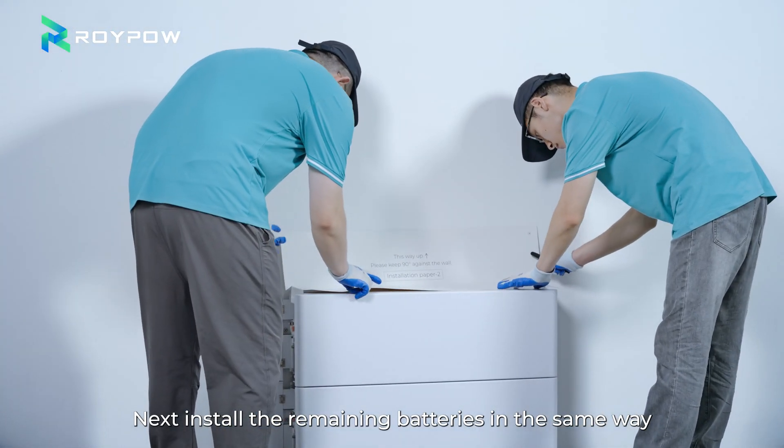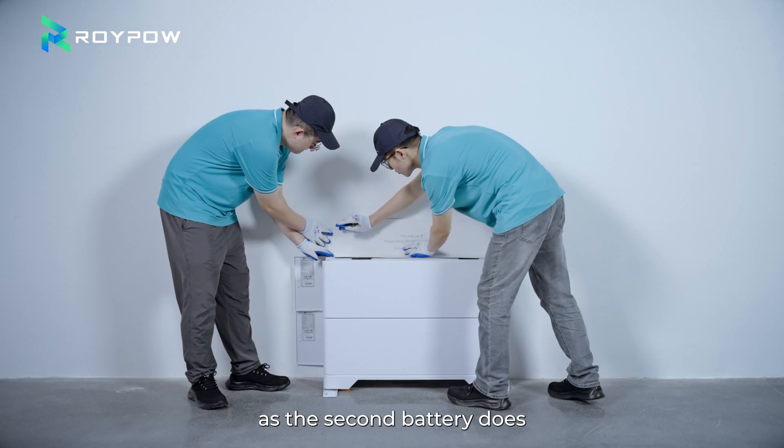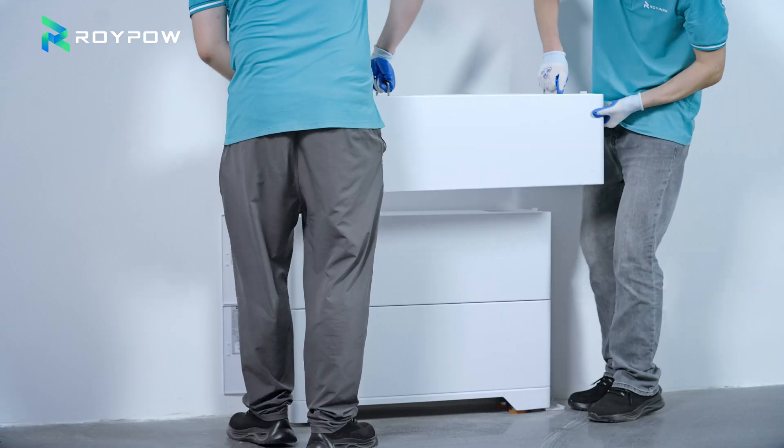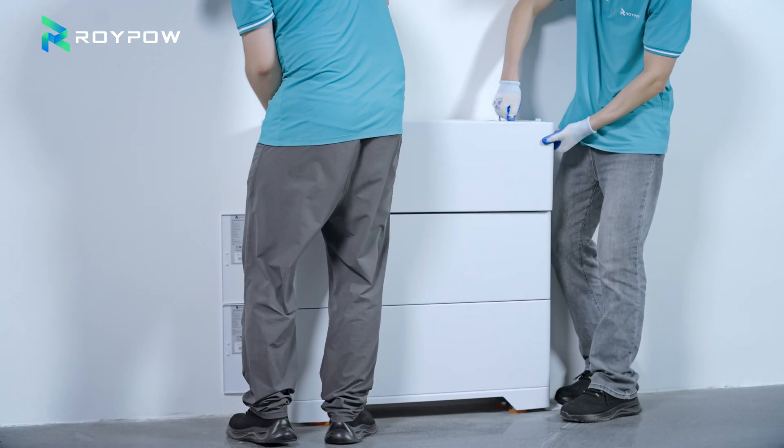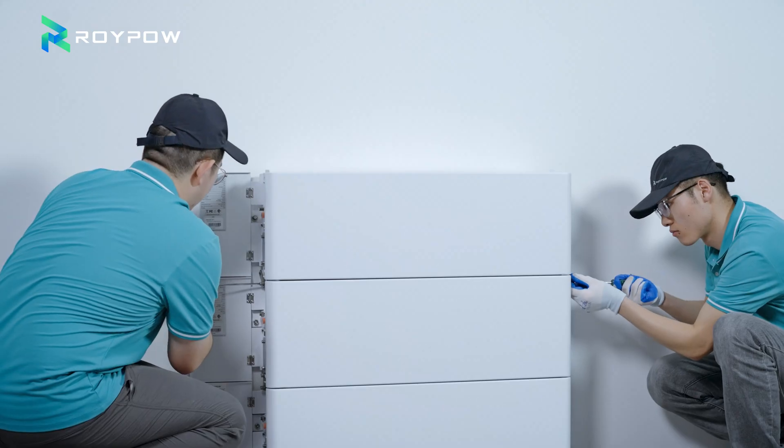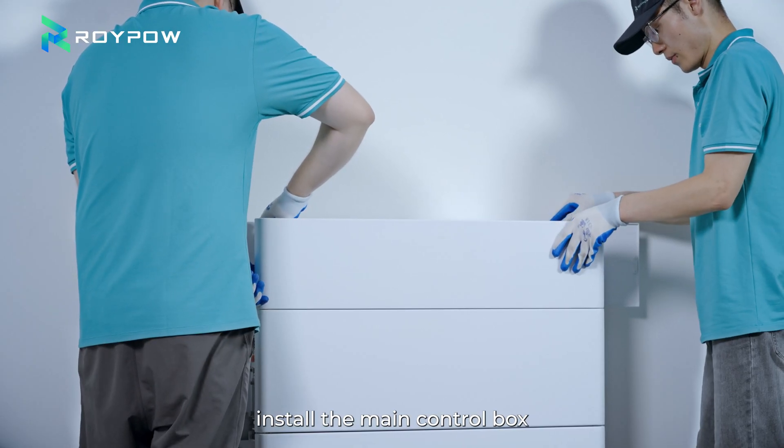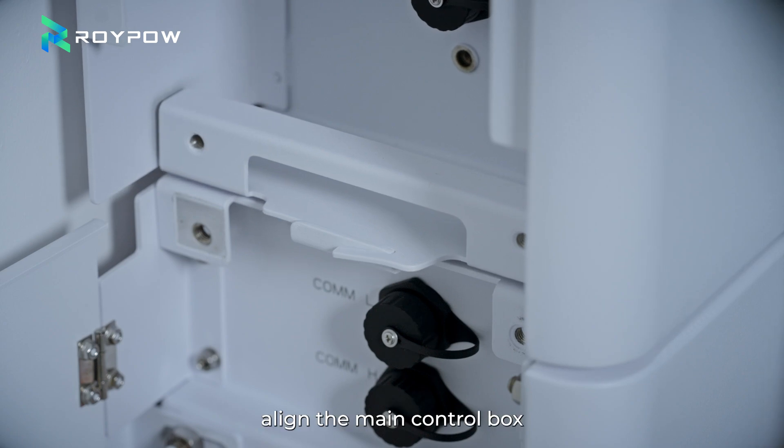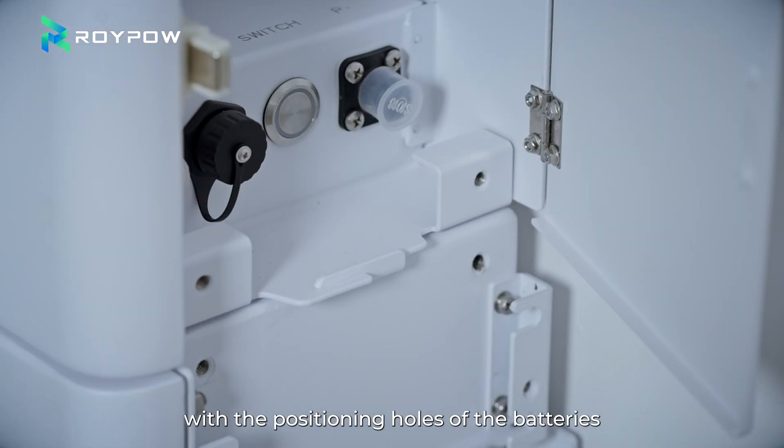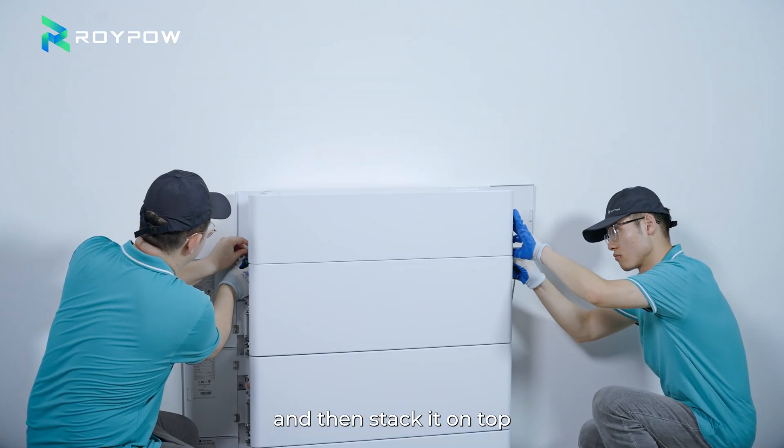Next, install the remaining batteries in the same way as the second battery does. After installing all the batteries, install the main control box. Similarly, align the main control box with the positioning holes of the batteries and then stack it on top.